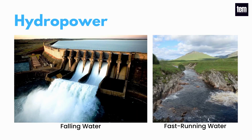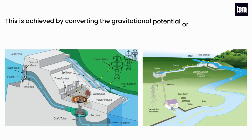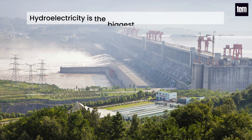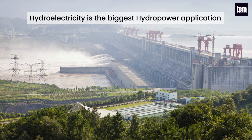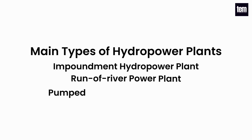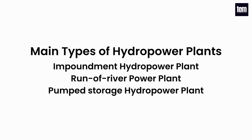Hydropower, also known as water power, is the use of falling or fast running water to produce electricity. This is achieved by converting the gravitational potential or kinetic energy of a water source into mechanical energy through a hydraulic turbine, which is coupled to a generator to produce electric energy. Hydroelectricity is the biggest hydropower application.